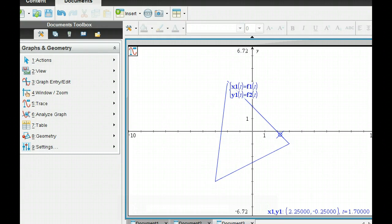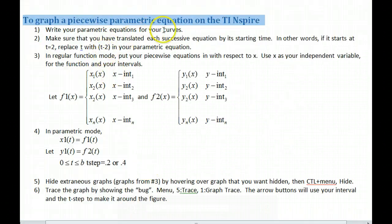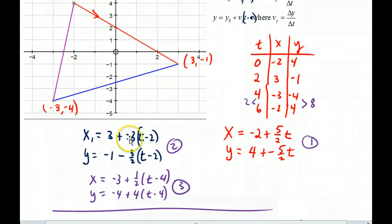So in summary, to graph a piecewise parametric on the TI Inspire, write your parametric equations for your curves. Then you make, for number 2, make sure that you have translated for each starting time. In other words, if it starts at T equal to 2, replace T with T minus 2.